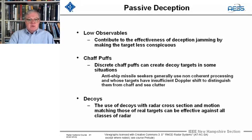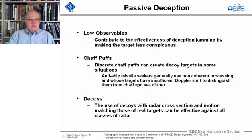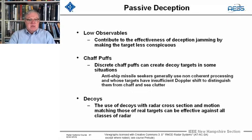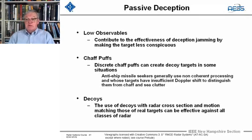Chaff puffs can be used to create decoy targets in some situations. Anti-ship missile seekers generally have non-coherent processing, and those targets have insufficient Doppler shift to distinguish chaff and sea clutter. So chaff puffs can be used to attract the anti-ship missile away from the ship. Decoys can also be launched with real radar cross-sections, shaped to have very large RCS and motion matching real targets, and they can be effective on all classes of radars.